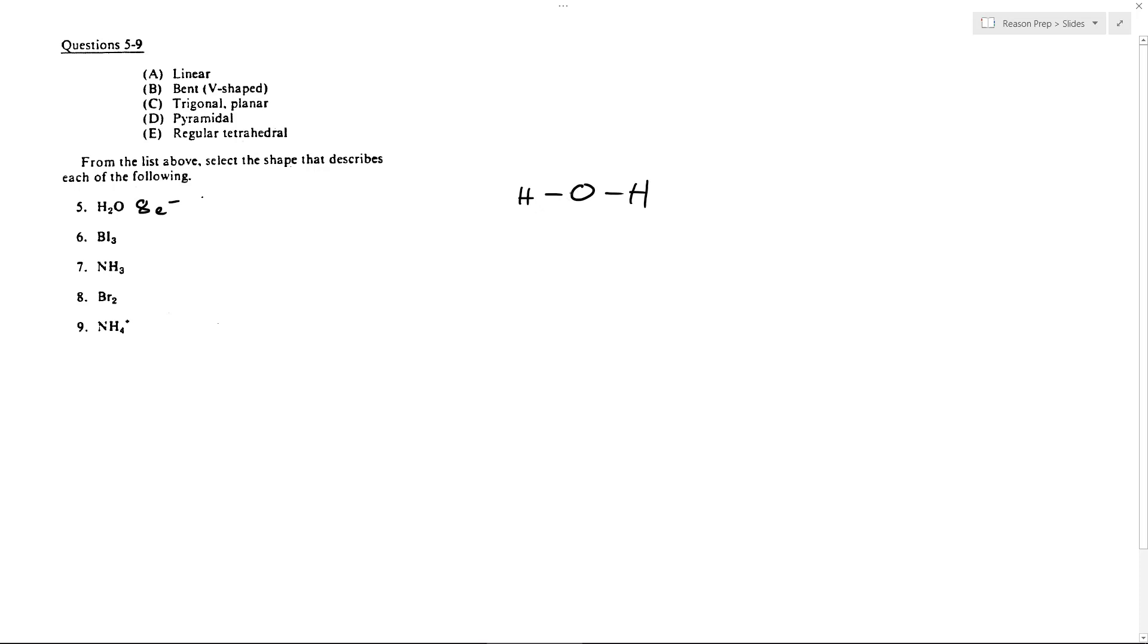You got to put in the electrons because what's going to determine the shape is the bonding and unpaired electrons that are around the central atom. That will determine the shape. So no matter how we draw this, it doesn't really matter because what's going to matter is the electrons around that central atom.